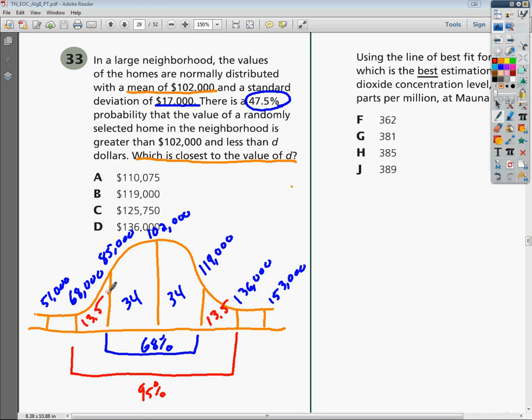And then the last section here, you have 99.7, so all of this here is going to be 99.7, and we'll write it over here. Divide that by 2, and then subtract out the 13.5 and the 34, and you're going to get 2.35.